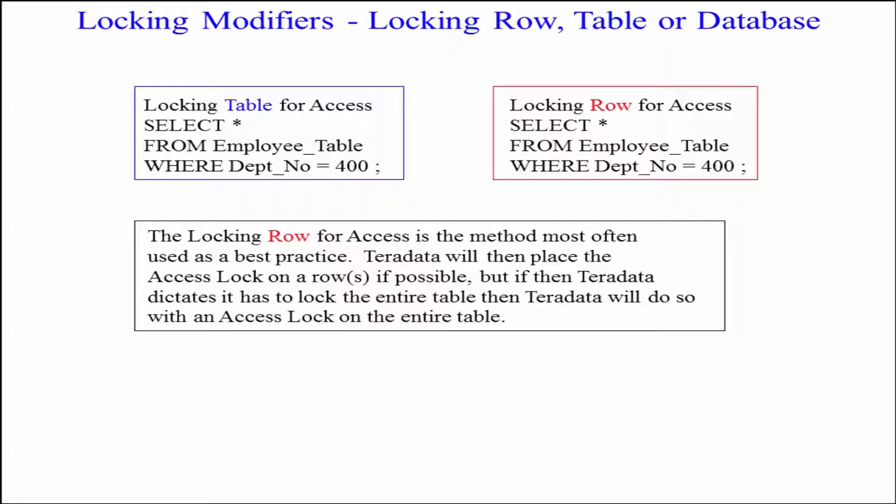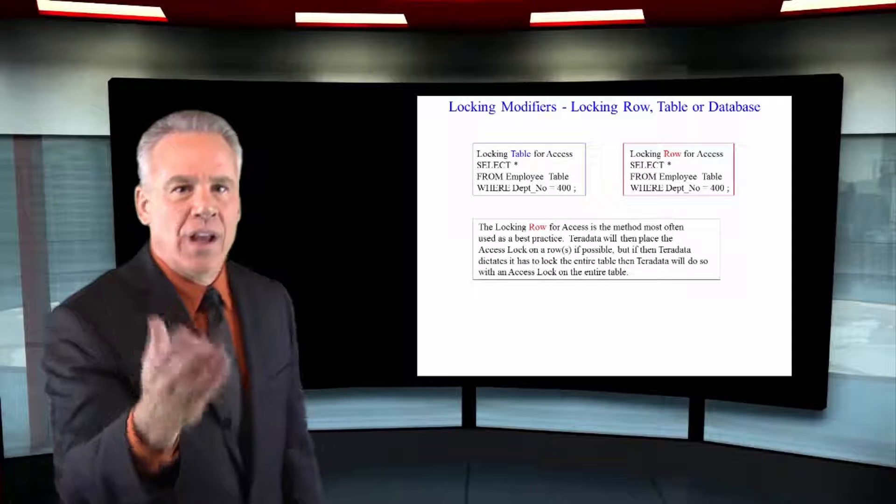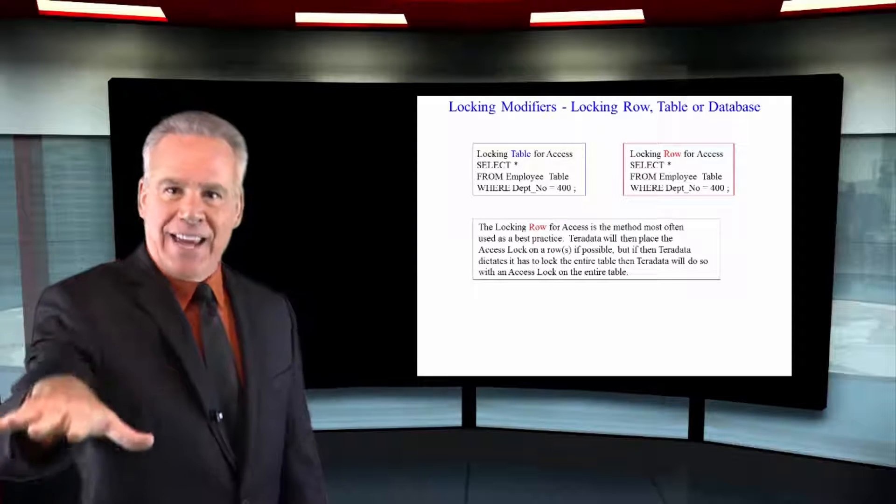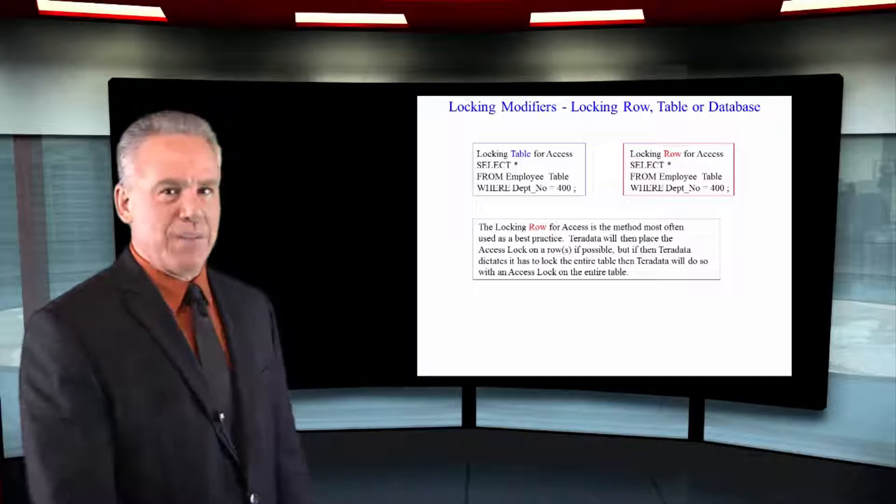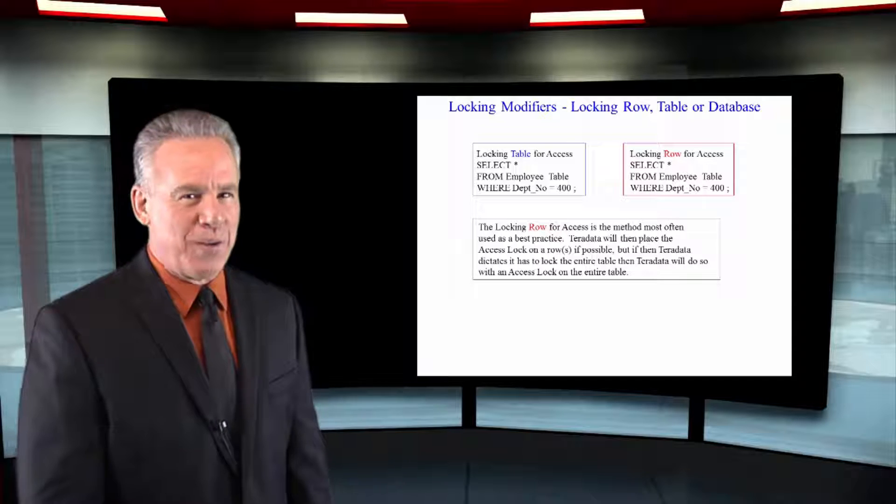You can even do this, locking row for access, and if it gets the opportunity, it'll say, we're just going to lock at the row level and put an access lock on this. But if they can't, they'll still put an access lock at the table level. Both of these statements could save you an enormous amount of time.